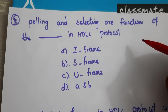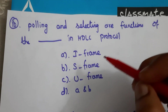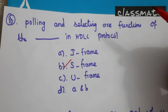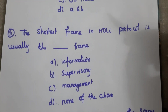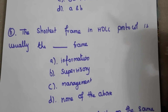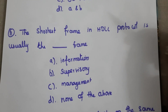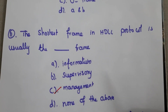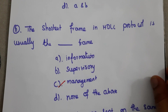Next question: polling and selecting are functions of which frame in HDLC protocol? The answer is B — the S-frame. Next question: the shortest frame in HDLC protocol is usually which type? The answer is C — the management frame (U-frame).